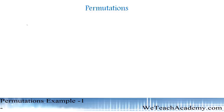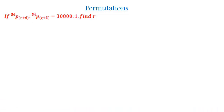Hello friends, welcome back. Today we are going to solve an example on permutations. Given that 56P(r+6) to 54P(r+3) is equal to 30800 to 1, we have to find the value of r.